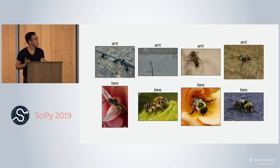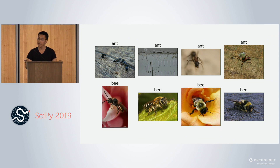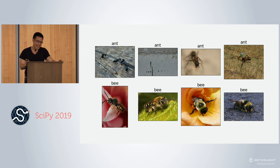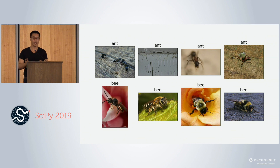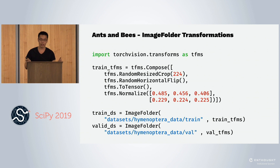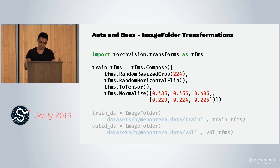Next we have the ants versus bees dataset. For images, normally images do not all fit in memory, so you can't use NumPy arrays. The Dataset API in PyTorch is very standard if you use PyTorch. When doing images, it's good to do data augmentation. PyTorch provides utilities for this in the TorchVision library — a random crop, random horizontal flip, and normalization.